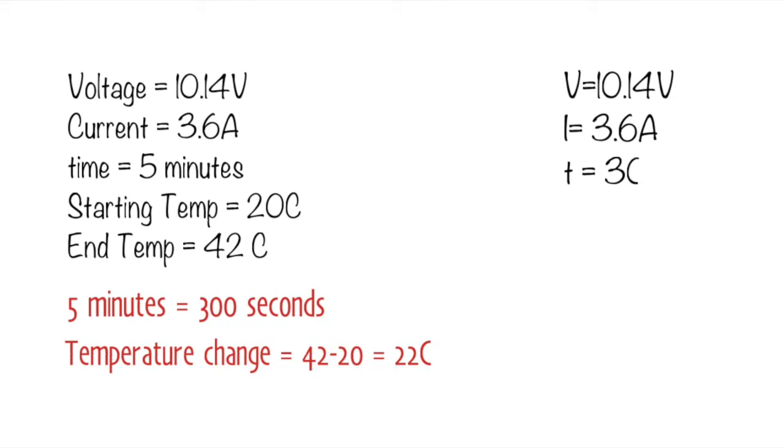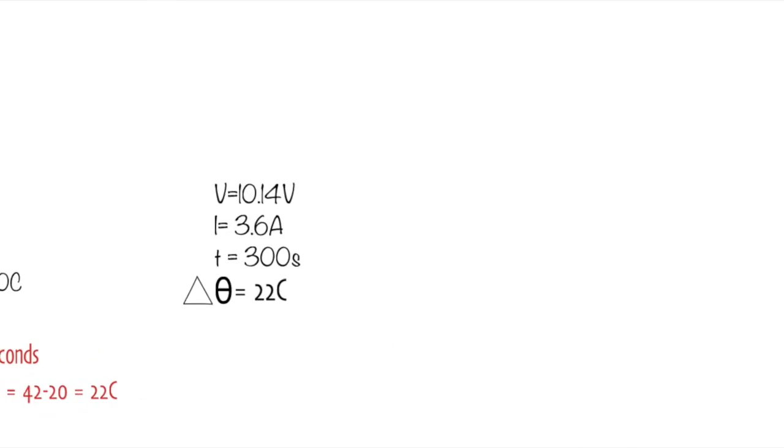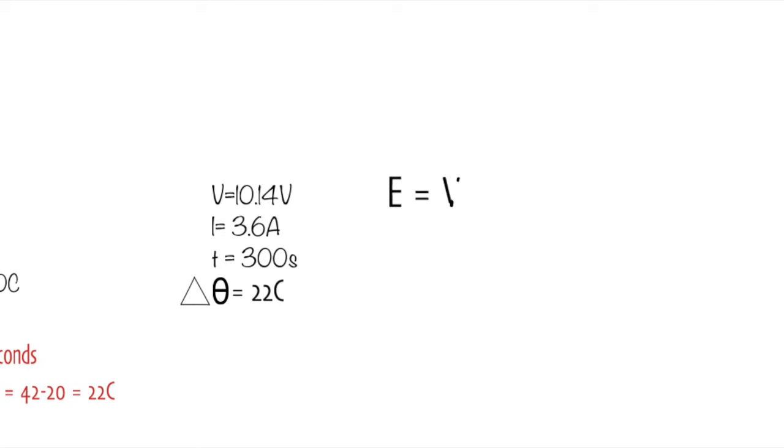In an exam you can write down V equals 10.14V, I - the symbol for current - is 3.6 amps, t of course is 300 seconds. Next two symbols: the little triangle stands for delta, that means change, and the theta symbol is for temperature, so the change in temperature is 22 degrees Celsius. You do need to know that energy equals current times voltage times time. You stick the values in and you end up with the total energy supplied is 10,951 joules.